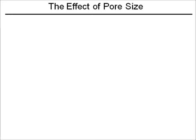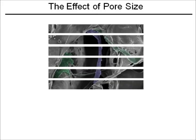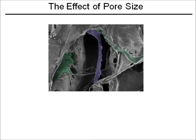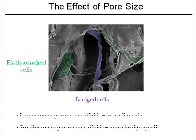In highly porous scaffolds, cells can attach in one of two morphology types: flat, akin to 2D monolayer culture, or bridging, where the cell spans the void space of the pore. As the mean pore size decreases, it is easier for cells to bridge the void space and therefore more cells adapt to the bridging morphology type.